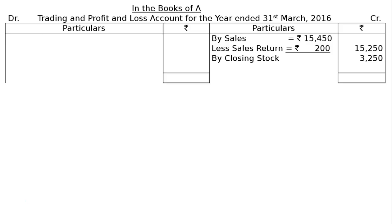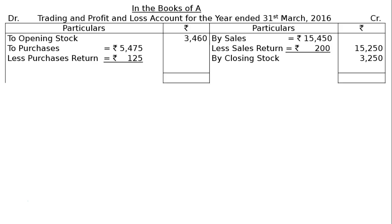On the debit side, we have opening stock rupees 3,460. Then purchases rupees 5,475 less purchases return rupees 125, giving a final column figure of rupees 5,350. The credit side total is rupees 18,500. Writing this in the debit side, we find gross profit carried down is rupees 9,690.